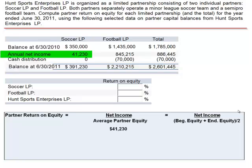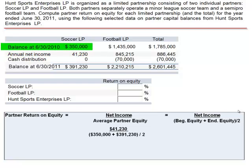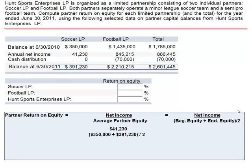Soccer LP's net income is $41,230, divided by $350,000 (the beginning equity balance) plus $391,230 (the ending equity balance), divided by 2. $41,230 divided by $370,615 gives a partner return on equity of 11%.